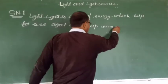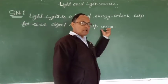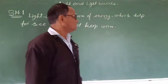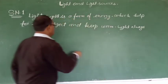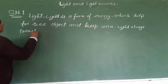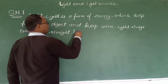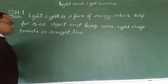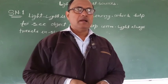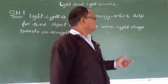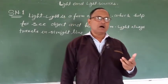Light always travels in a straight line. We see objects when light falls on them and bounces off the objects. Light bounces from the objects and then we see them.